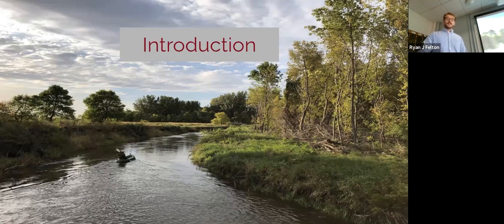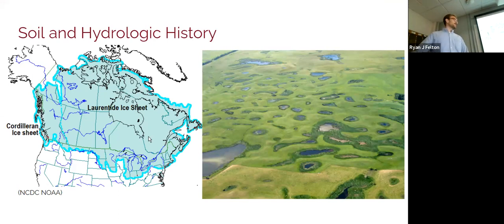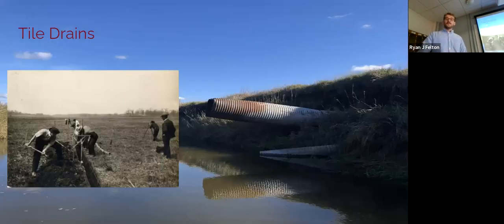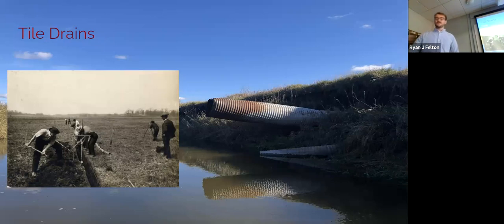We'll start from the perspective of a land manager looking at this system. Headwater agricultural streams are fairly new hydrologic and topographic systems. Most of Minnesota was covered by glaciers during the last glaciation 10 to 12,000 years ago, which left a landscape called the Prairie Pothole region. This is characterized by shallow wetlands that pool water across the landscape and is marked by very poorly developed drainage systems — a young landscape with a lot of potential for agriculture.